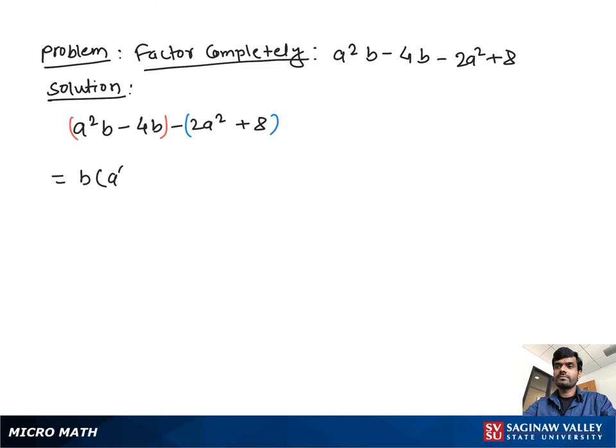Now from both sides we take out a² - 4 as a common, then we have left b - 2. As you see, we can still factor a² - 4.